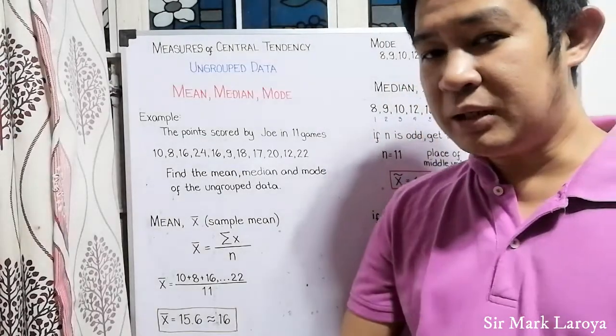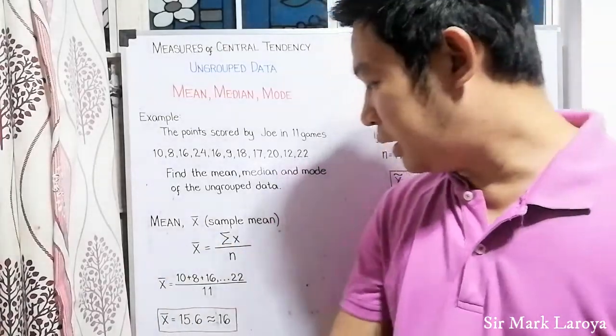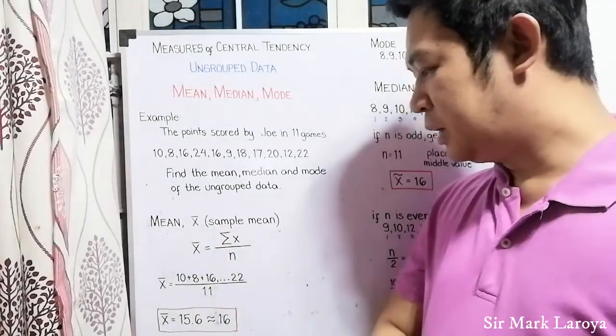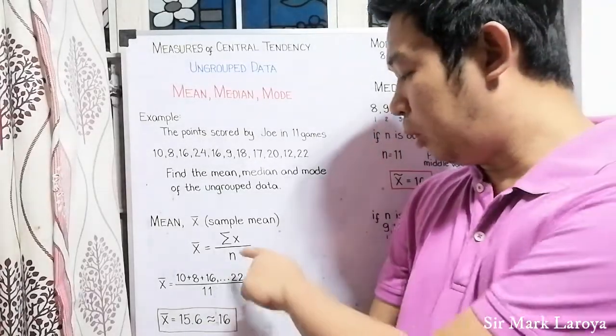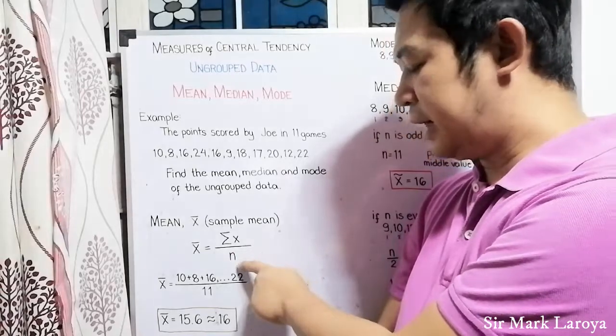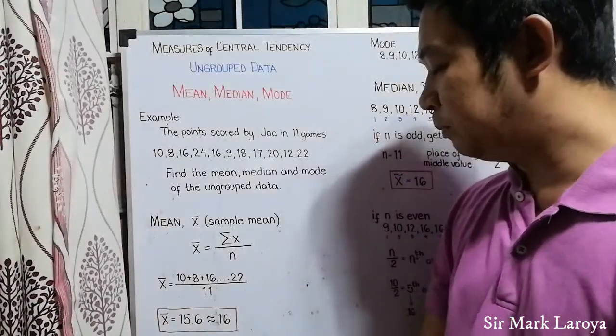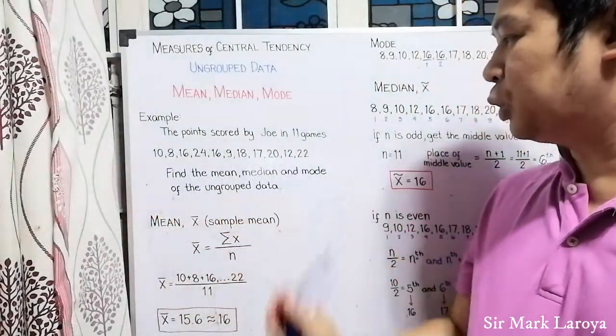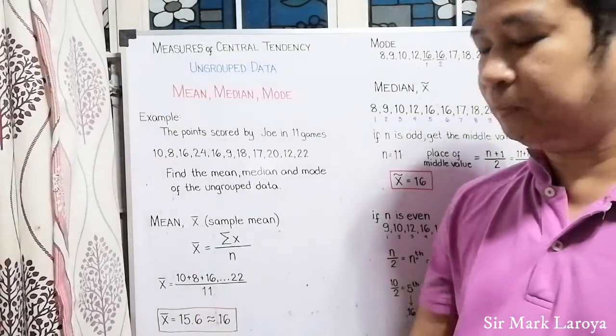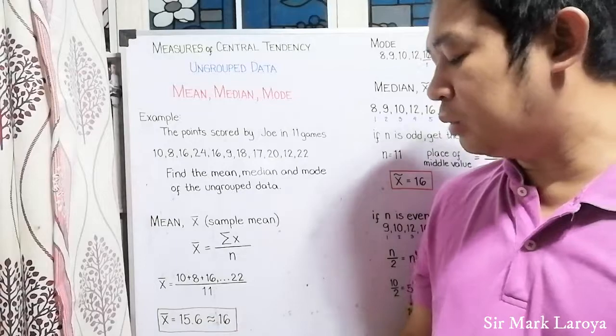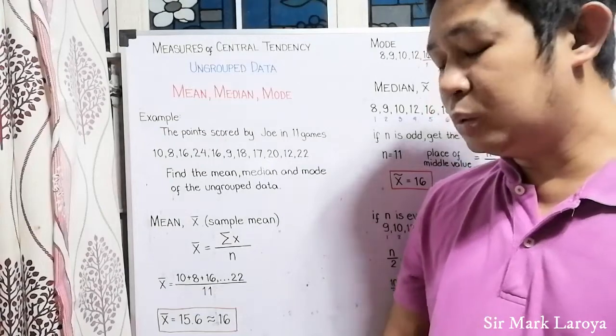When we say mean, it is simply the average score. It is represented by small x bar or that is sample mean. The formula for the mean or the sample mean would be x̄ equals summation of all the values of x all over n, the sample size. So, x̄ now, our sample mean would be add all of these points scored by Joe in 11 games and then divide it by our sample size which is 11. And then, we will get the sample mean is now equal to 15.6 or that is roughly equal to 16 points.